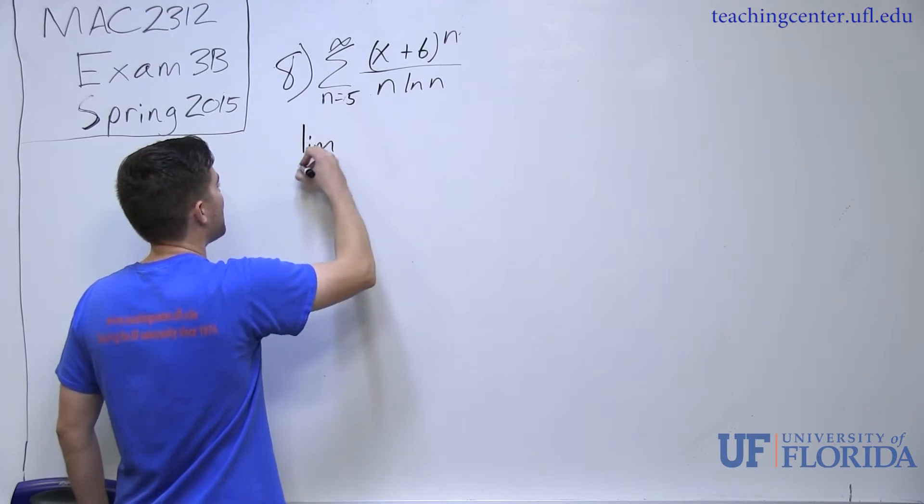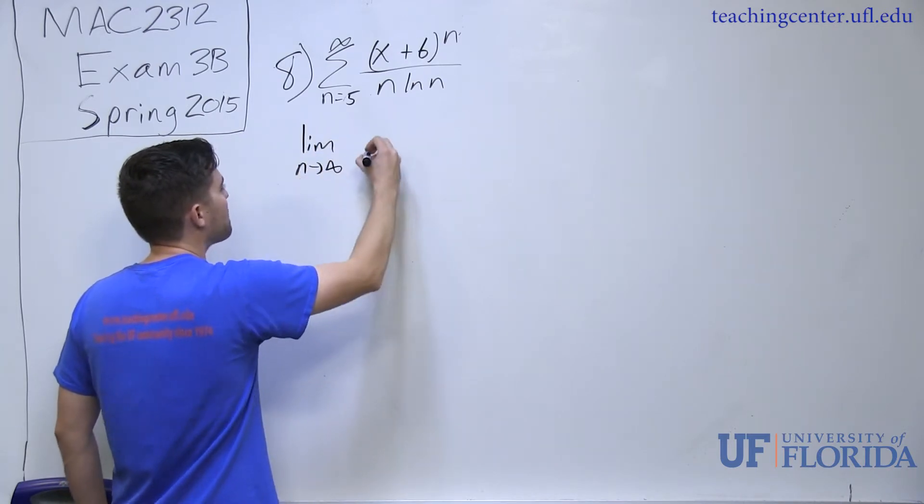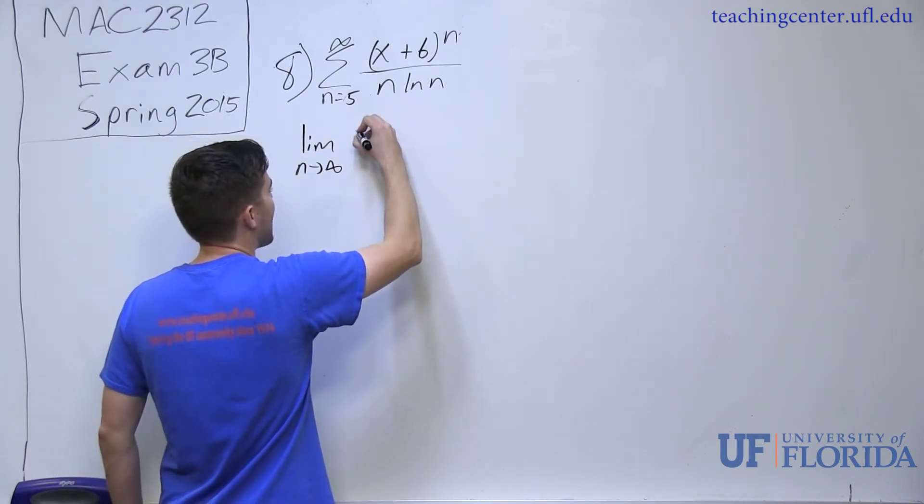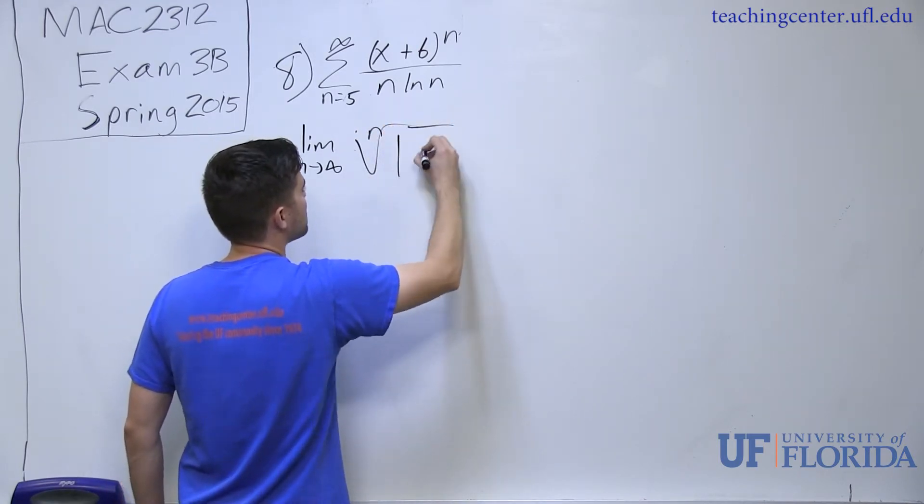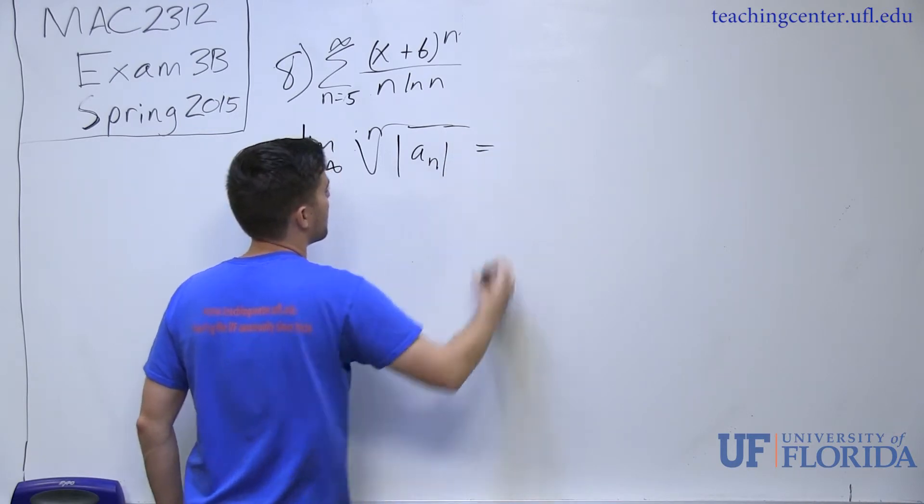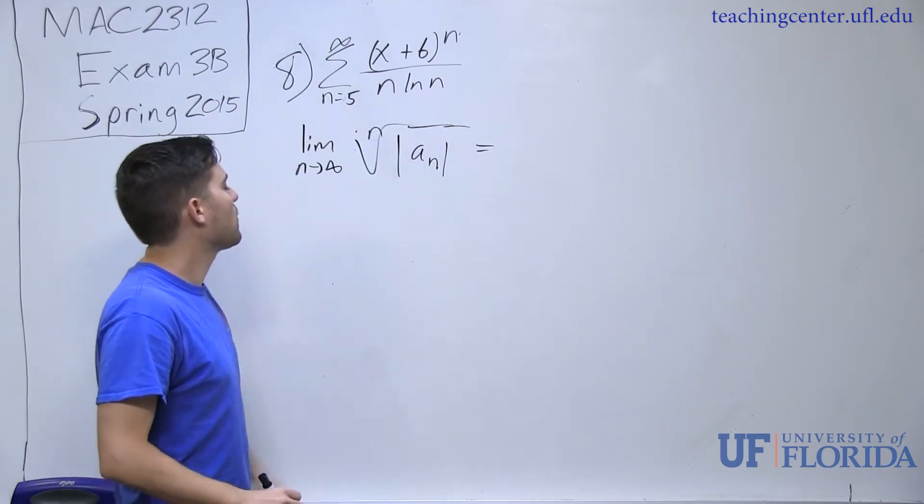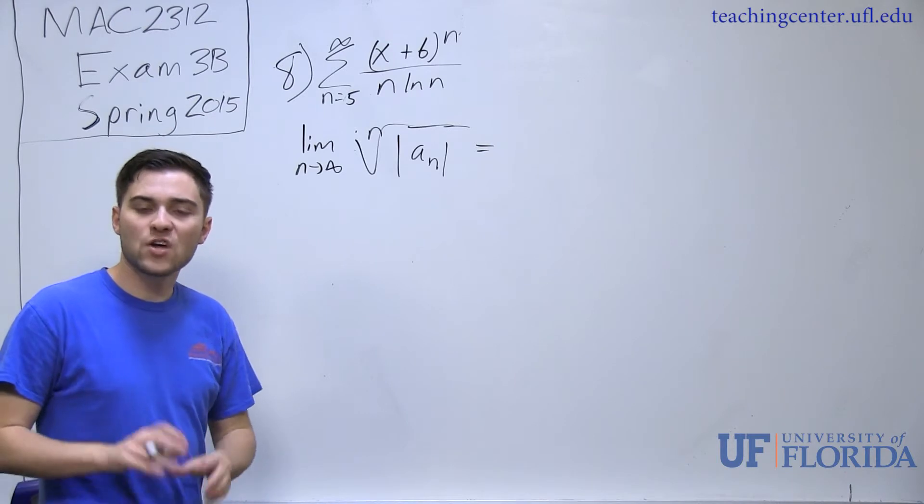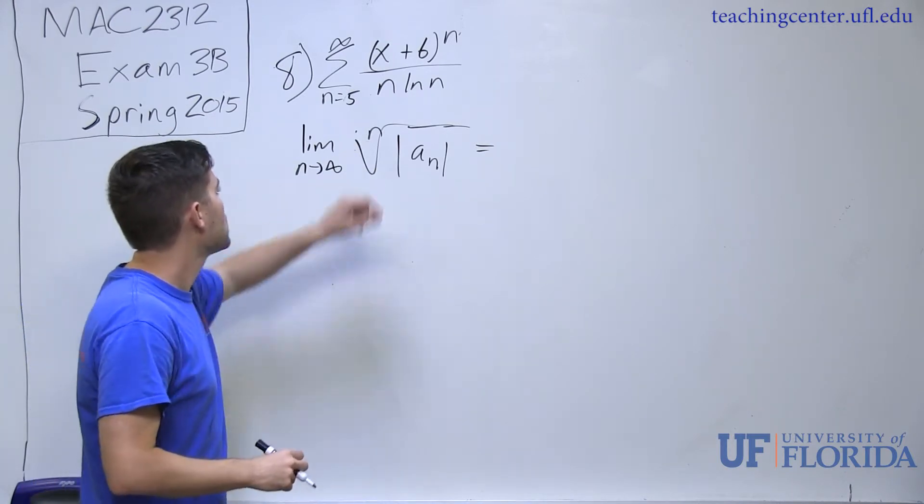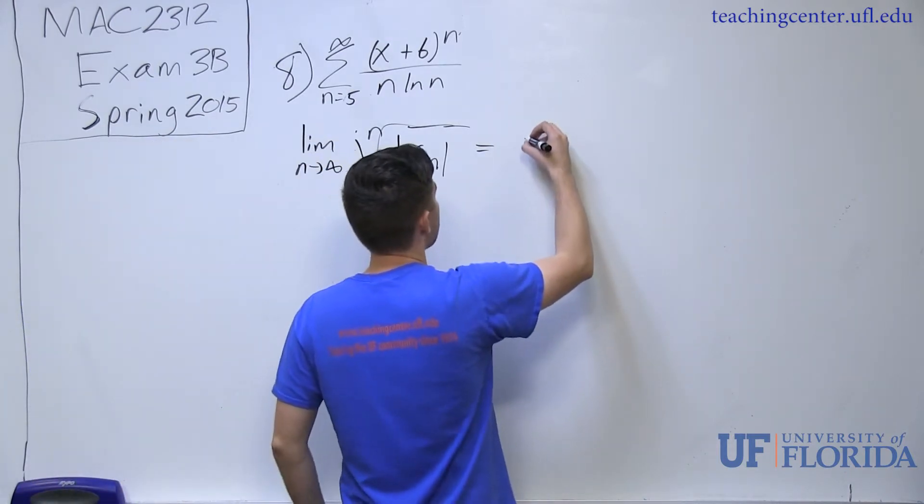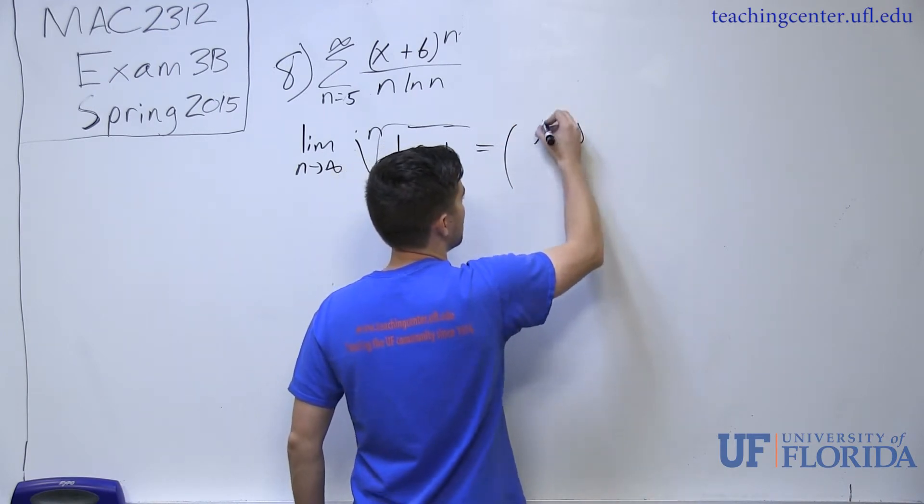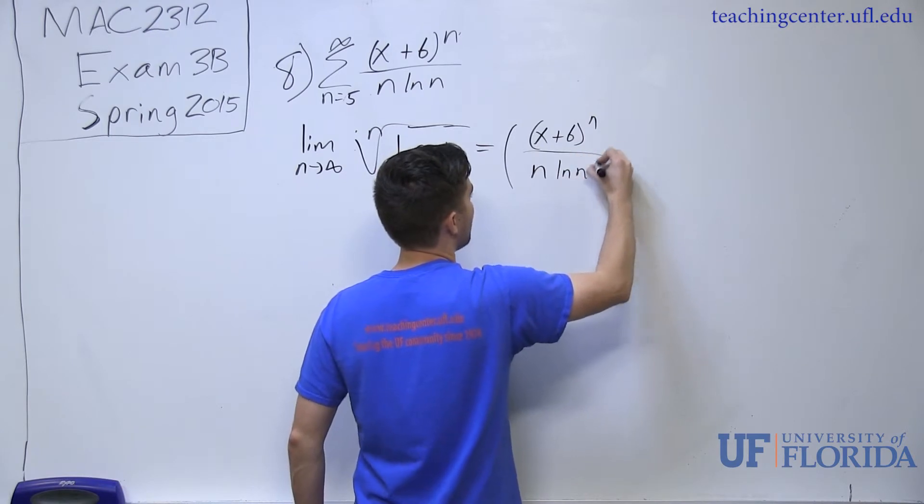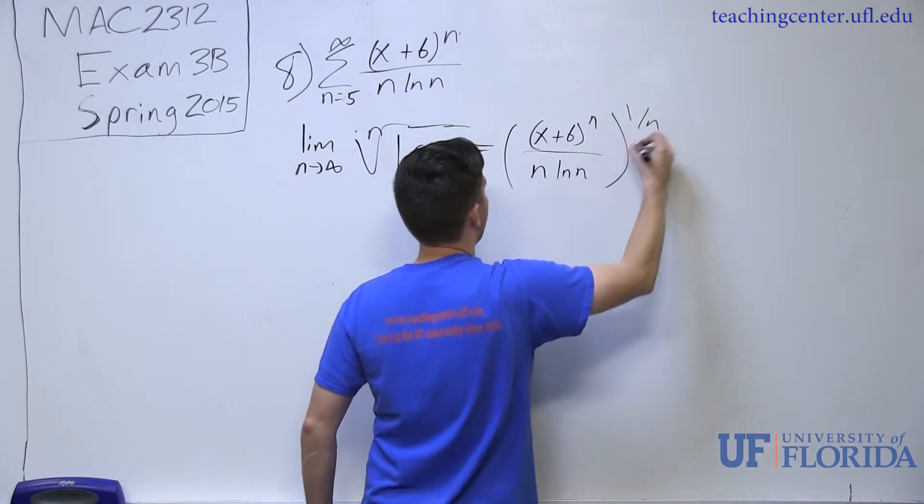Root test says that the limit as n approaches infinity of the nth root of the absolute value of a sub n. In this case, I know what my a sub n is, I know what its absolute value is, I don't have to get rid of any negatives or anything. If I go ahead and take the nth root of that, I have x plus 6 to the n divided by n natural log of n, and that's all to a 1 over n.